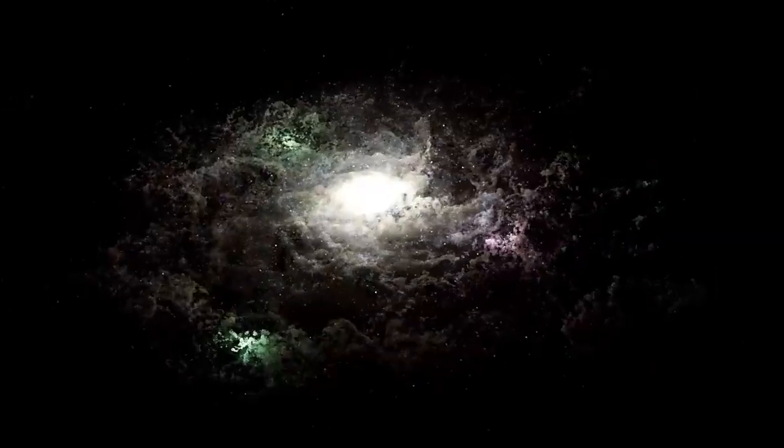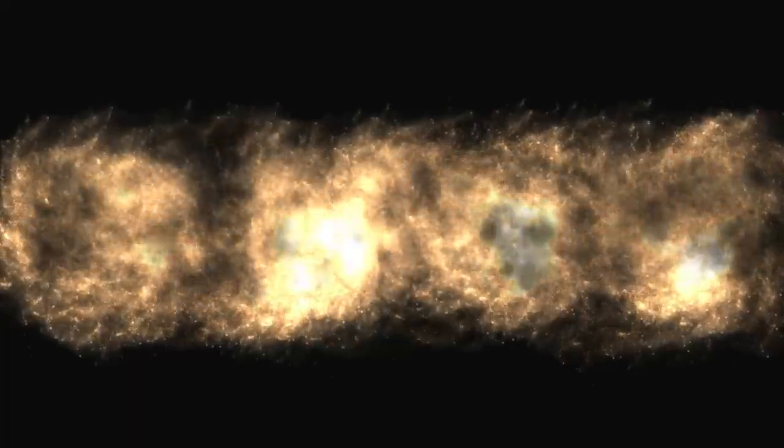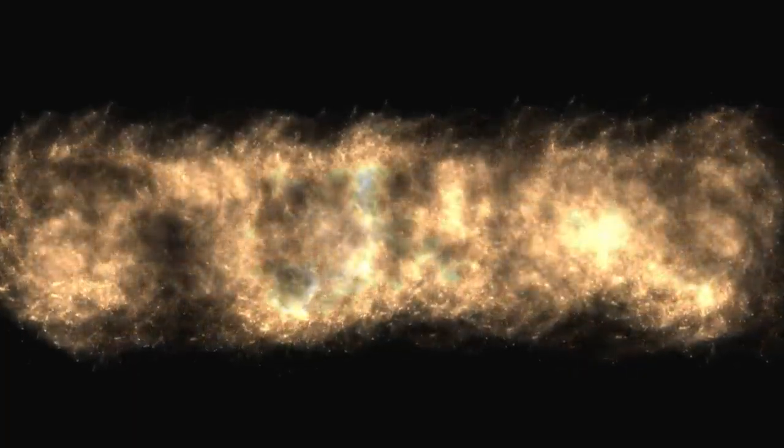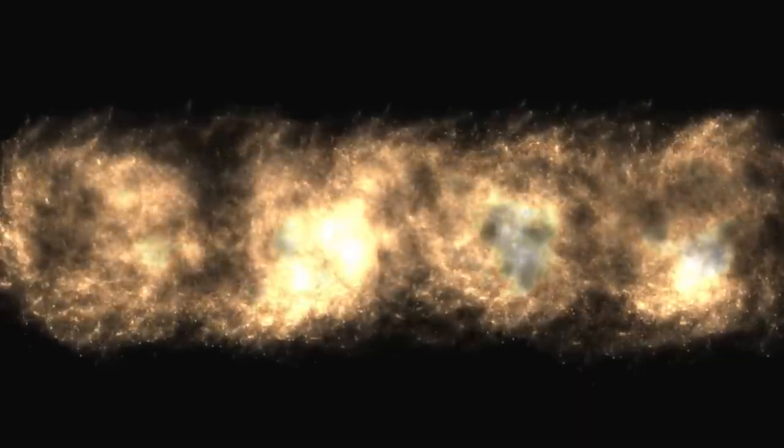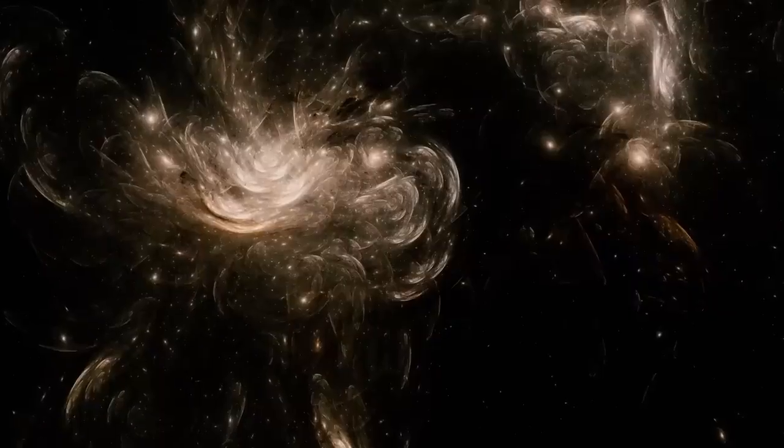Utilizing Einstein's theory of general relativity, Webb produced a sweeping panoramic image of ABEL 2744 displaying approximately 50,000 infrared light sources, including galaxies previously concealed from our view.